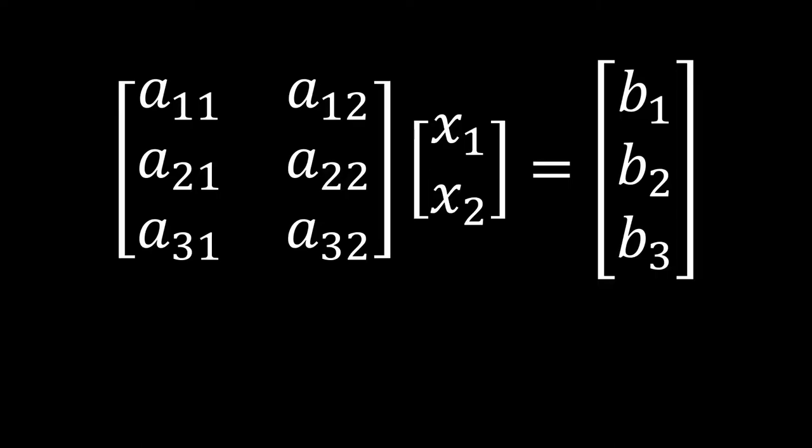Now, if you'll notice, our B vector is three-dimensional, but our X vector is only two-dimensional, and that's because our X vector is going to exist in our column space. But our B vector is not restricted to being in that column space.